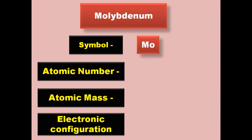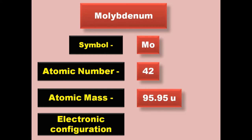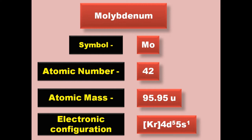Molybdenum has symbol Mo, atomic number 42, atomic mass 95.95, electronic configuration [Kr] 4d5 5s1. Molybdenum is a transition metal and exists in solid form at room temperature.